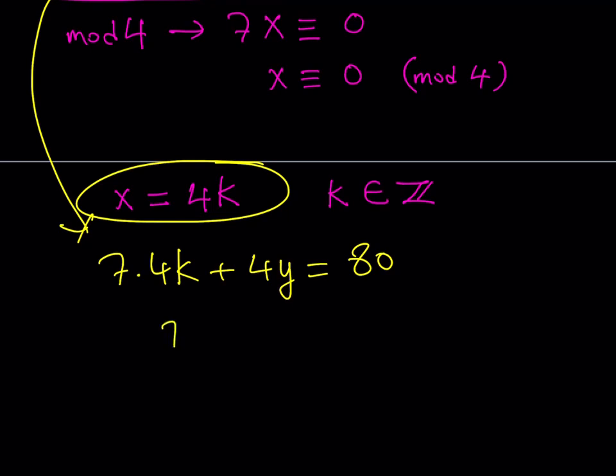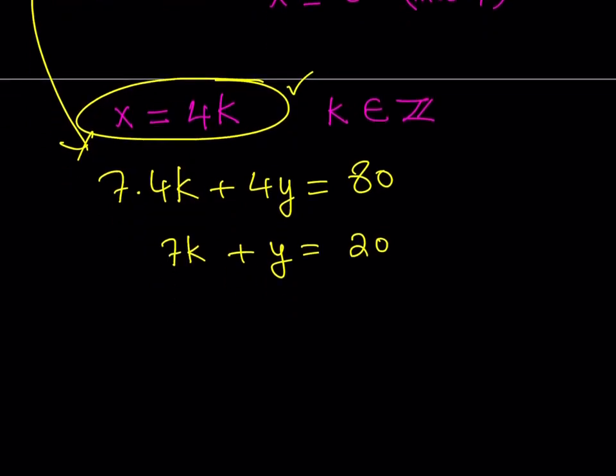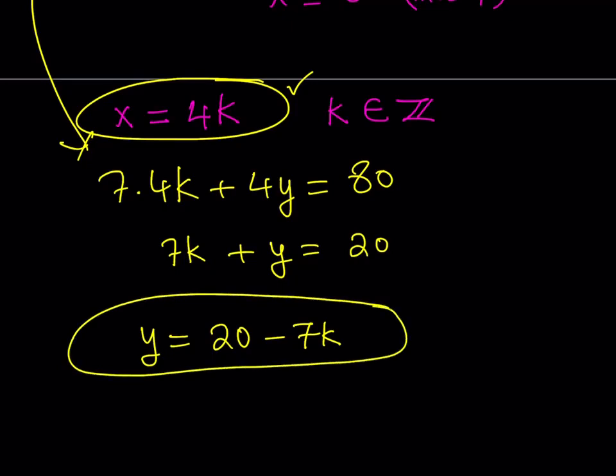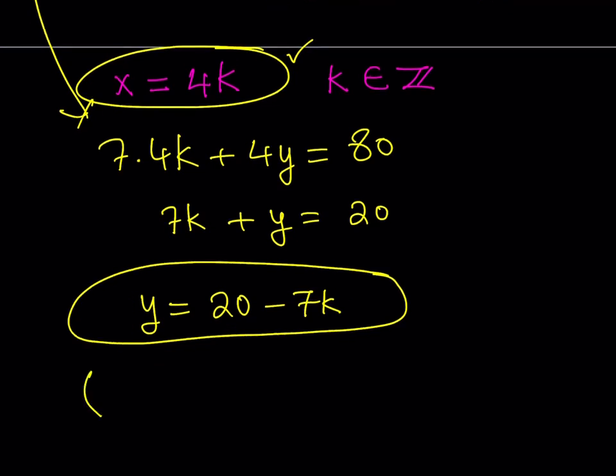That should give you 7k + y = 20. Notice that we found x in terms of k, which is a parameter, which is another variable. So we can do the same thing for y. If you isolate y, you'll be getting y = 20 - 7k. This is basically the method for solving Diophantine equations that are linear. We got our solutions. These are all the solutions because it's comprehensive, but this is a general solution.